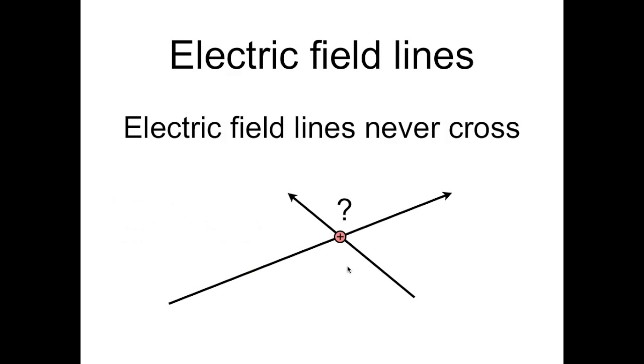The electric field can only point in one direction in each location, so this intersection presents us with an impossibility. So electric field lines can never cross. They can never intersect, but they can come very close together, like we've shown here.